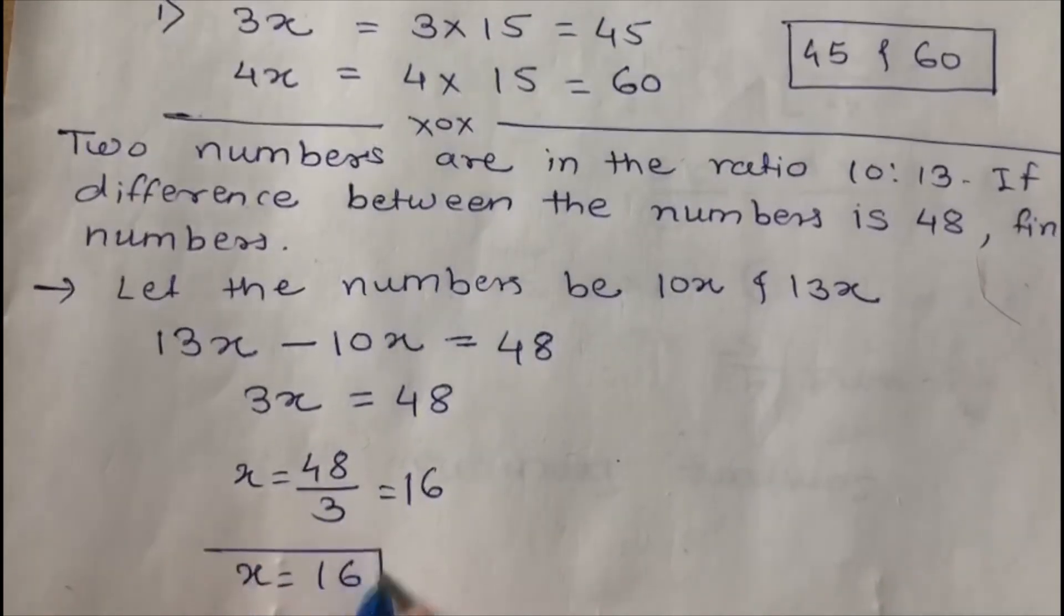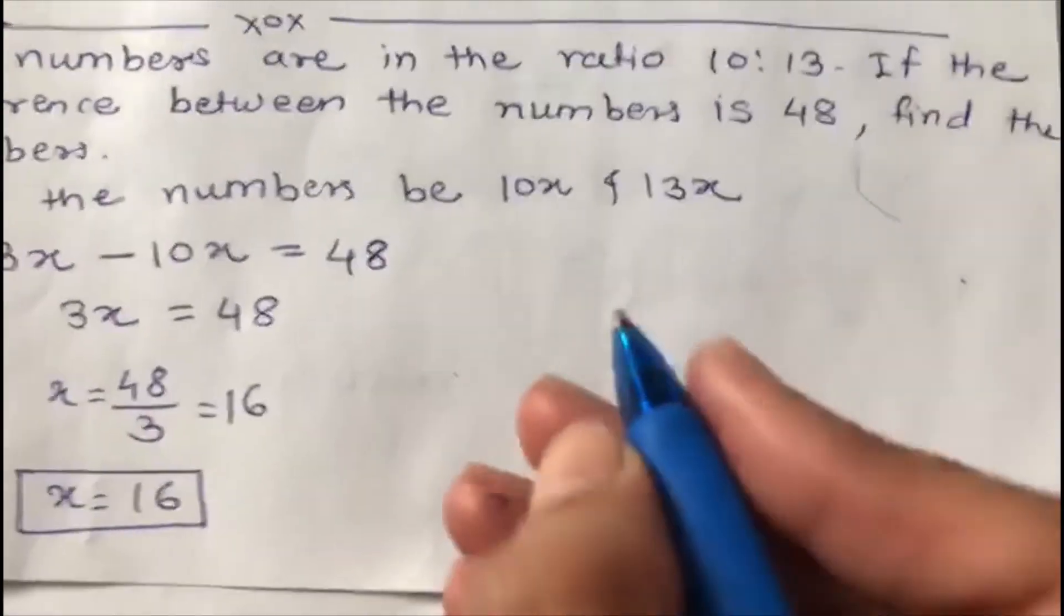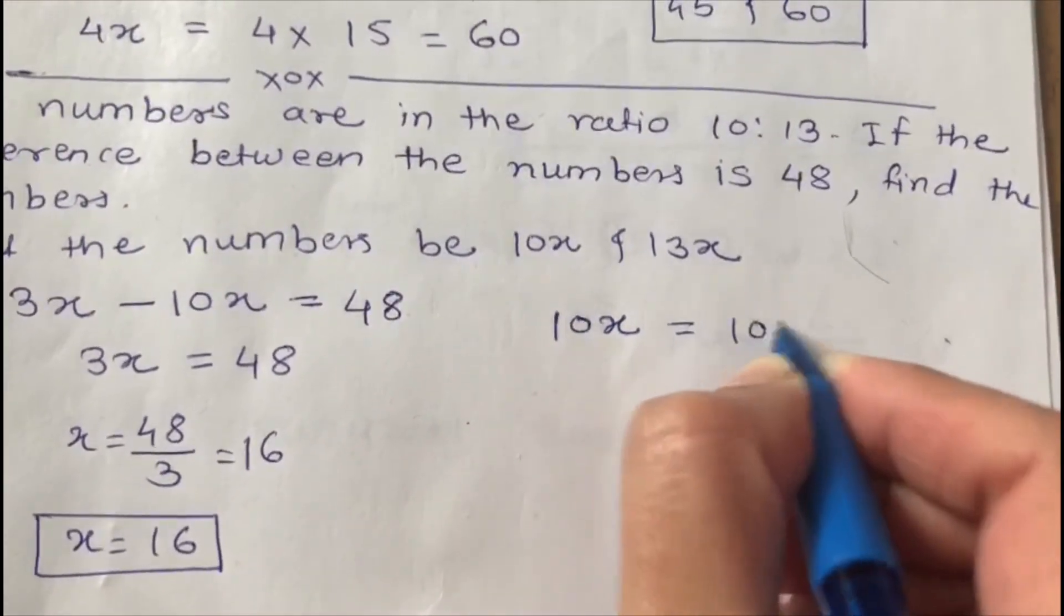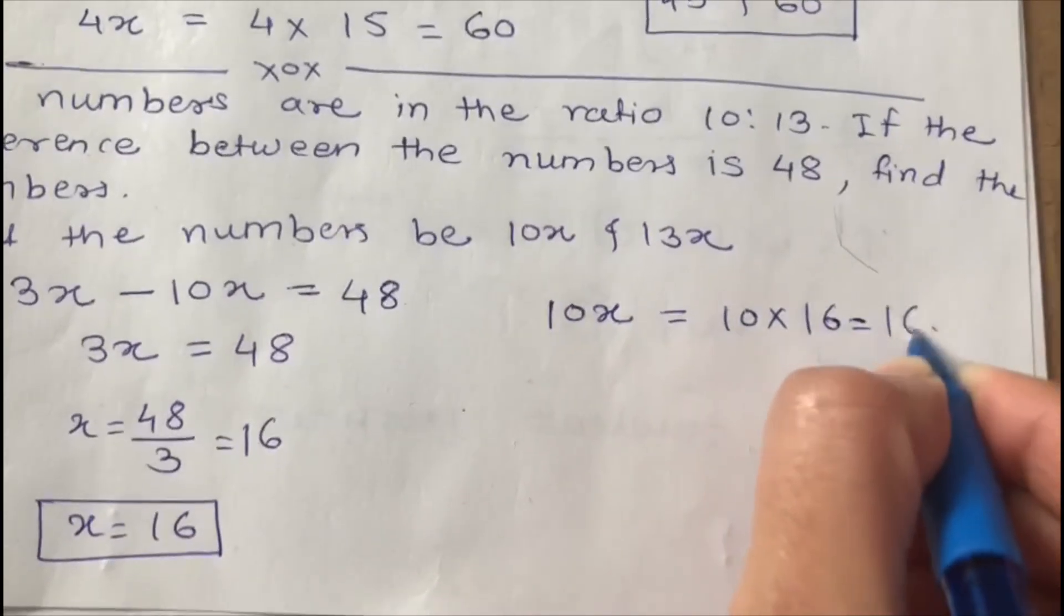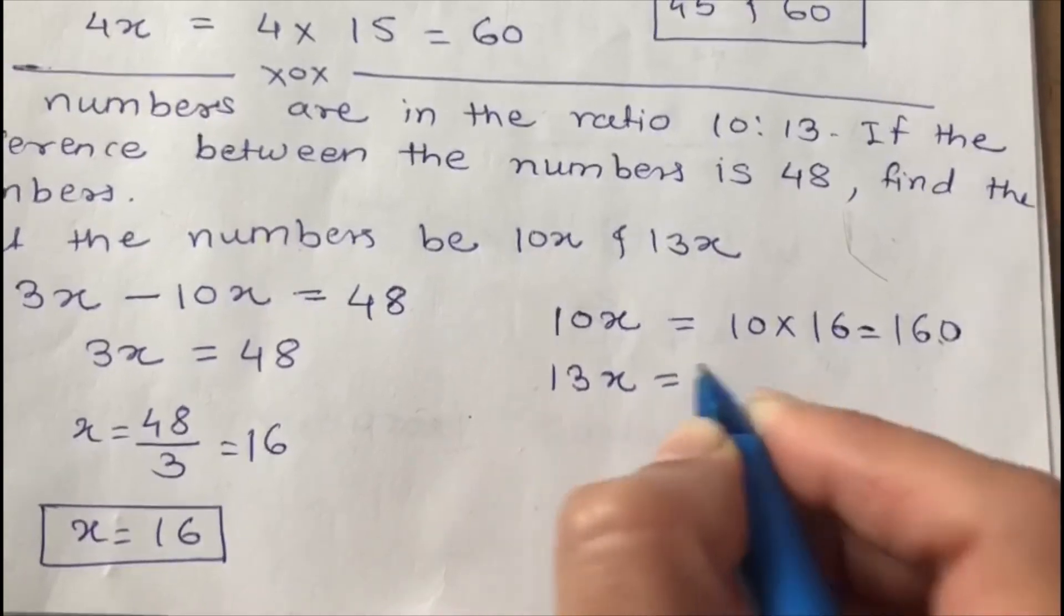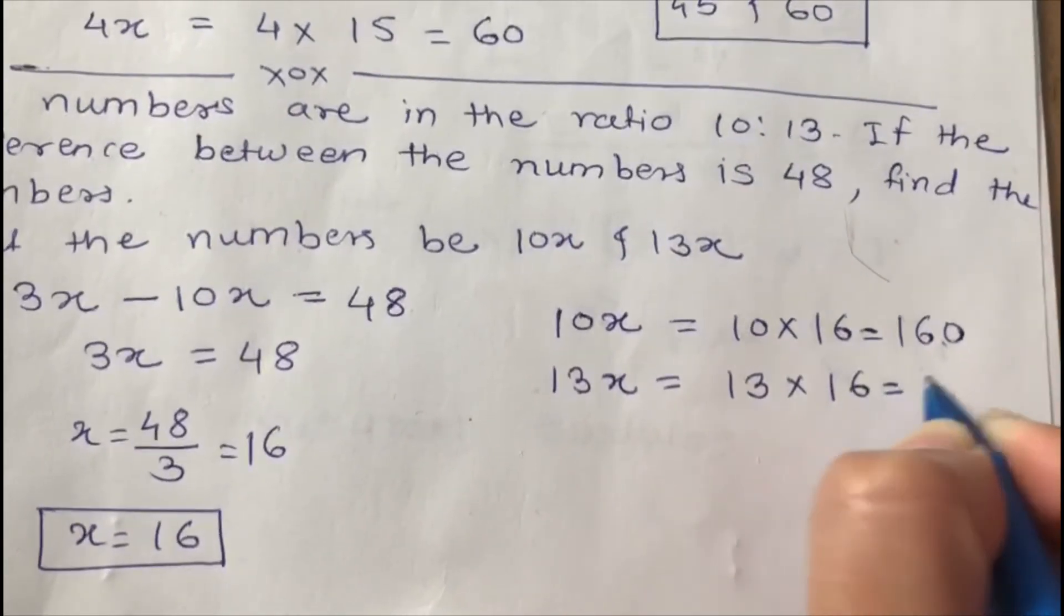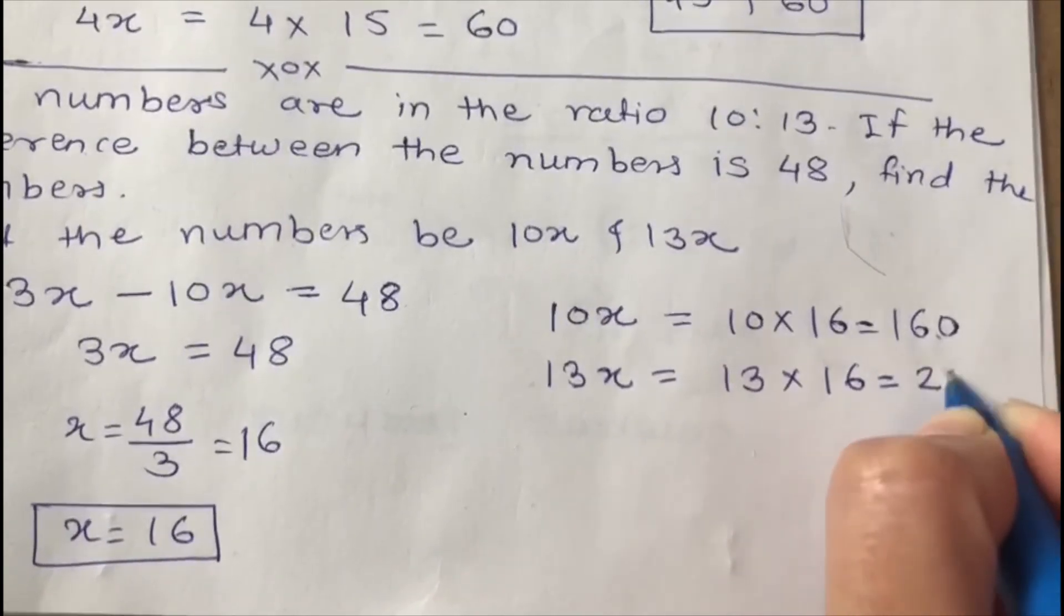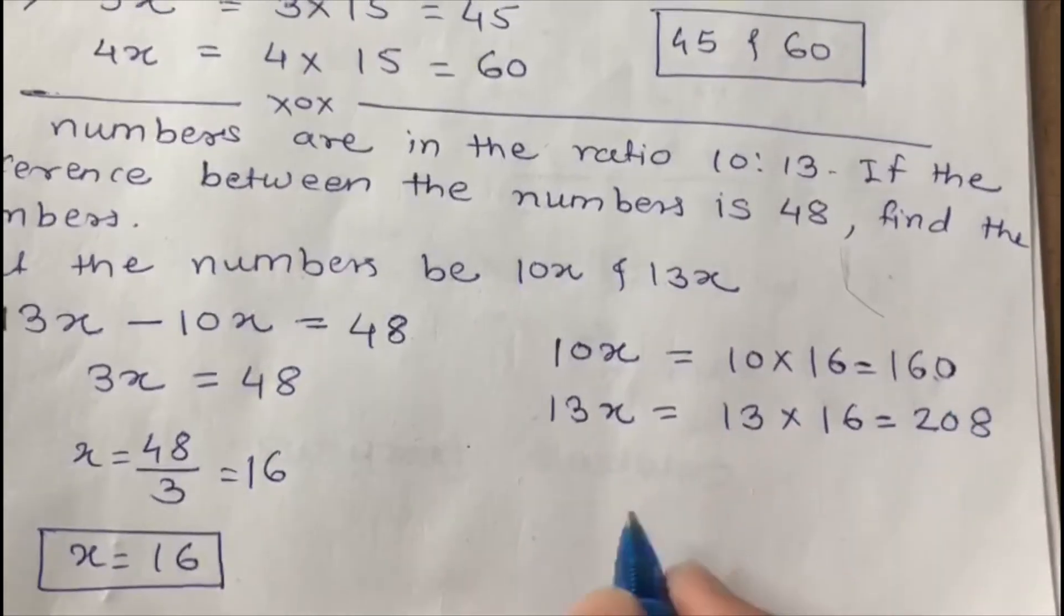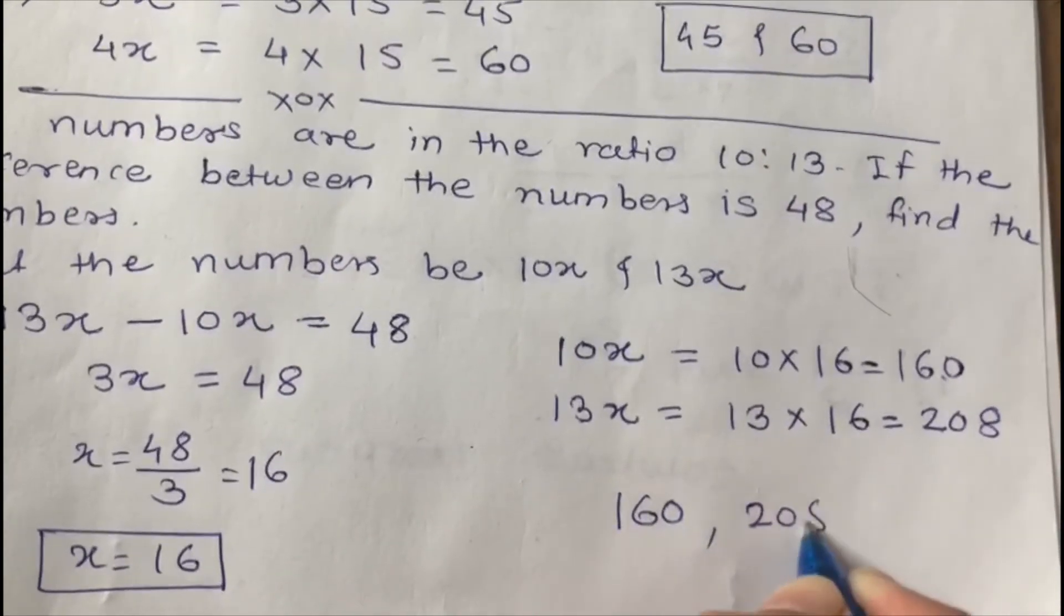So we have got the value of x, that is 16. So these two numbers are 10x, means 10 times 16, equals 160. And the other number is 13x, that means 13 times 16, which comes 208. So we have got these two numbers, 160 and 208.